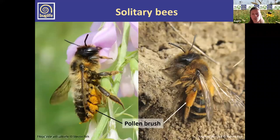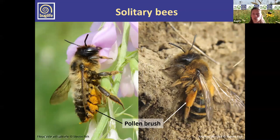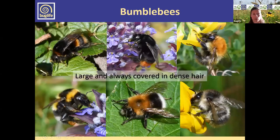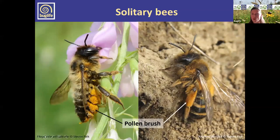Rather than having pollen baskets, solitary bees have what are called pollen brushes. This is how we can differentiate between bumblebees and solitary bees that might look similar. Bumblebees have a pollen basket like we saw on the honeybee, whereas solitary bees have pollen brushes — essentially branched hairs called scopae — that collect dry pollen. They don't have the flat, shiny pollen basket area.